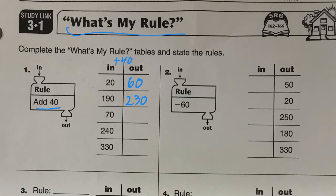Next up we have minus 60, but now we don't have anything in the in column, only the out. So we have to think: what minus 60 equals 50? We can do the opposite, which is add, so we know 110 minus 60 is 50, and 80 minus 60 is 20. We can do the opposite and figure out what goes in the in—if we don't have the in, we go backwards from out.